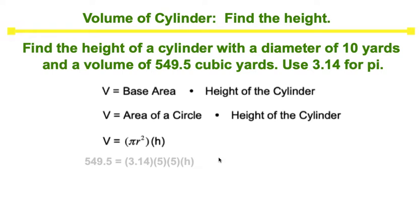So let's quickly substitute all of our values into the formula. Volume is 549.5. We are using 3.14 to represent pi. The radius is 5. So 5 squared is 5 times 5 and variable h will remain variable h.